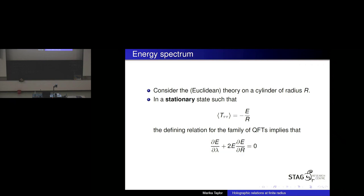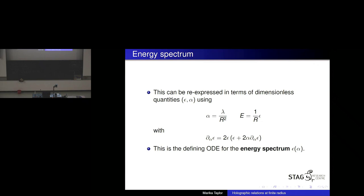You can manipulate this differential equation rather straightforwardly, rewriting things in terms of dimensionless quantities. The coupling lambda is dimension-full because the deforming operator is quadratic in the stress tensor. We introduce a dimensionless quantity alpha and a dimensionless energy epsilon. We get a neat equation for the energy characterized in terms of alpha — that's the defining ODE for the energy spectrum. The solution has alpha=0 corresponding to lambda=0, which is the CFT itself, and epsilon(alpha) tells you how the energy changes as you scan through the family of quantum field theories.